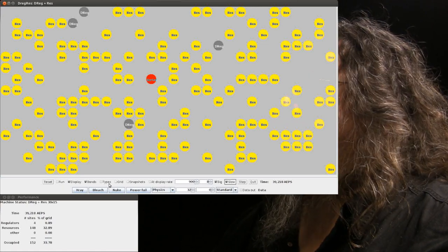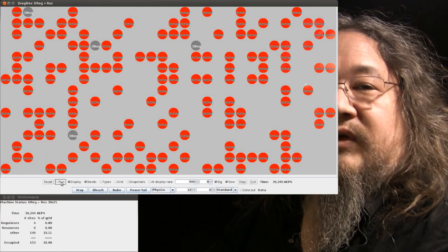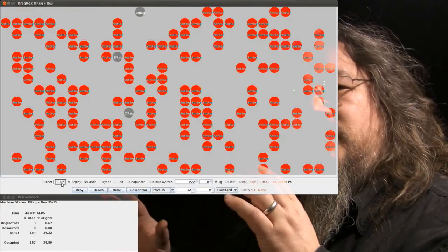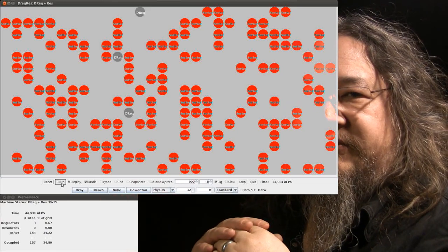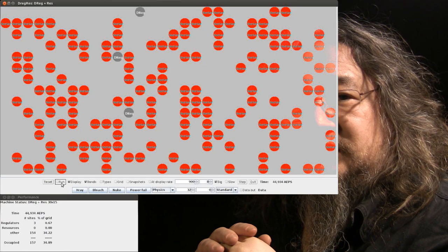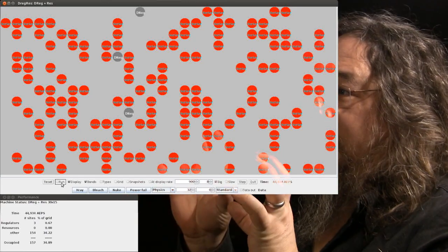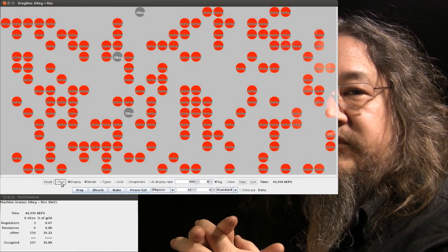So if we let this run just for a brief bit, the res have been taken over. We can take a DREG and res base and build things on top of it that will compete for the available resources, and they will automatically keep their total population under control because they can only get as big as the number of resources.